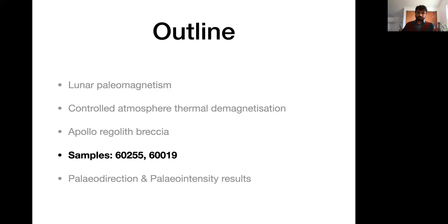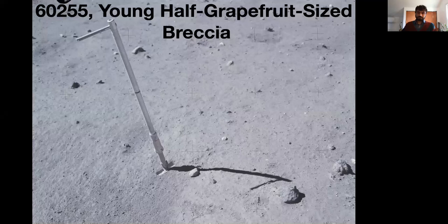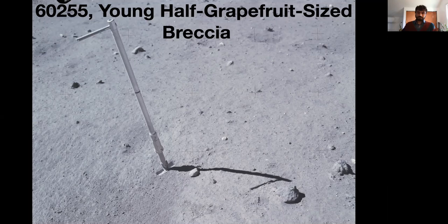Let's look at the samples we're working with. We have young regolith breccia 60255 and ancient regolith breccia 60019. Digging through the Apollo 16 journal, it turned out the astronaut picked up 60255 purely because it was the size of half a grapefruit and found that very interesting. Here is an audio clip of him chatting with Houston: 'Did you copy that about this rock? I picked up a half-grapefruit-sized rock.' Houston replied: 'We sure did, it sounds very interesting. Okay, it's going to bag 17.'